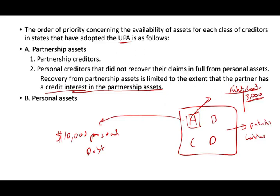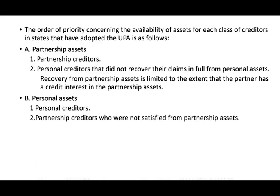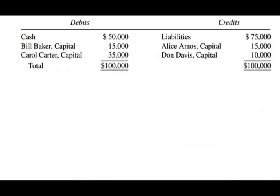Personal assets belong to personal creditors first. Partnership creditors who are not satisfied from partnership assets can make a claim against an individual partner regardless of whether that partner has a debit or credit interest in the partnership. They can go after you personally, but the priority is for the personal creditor first.